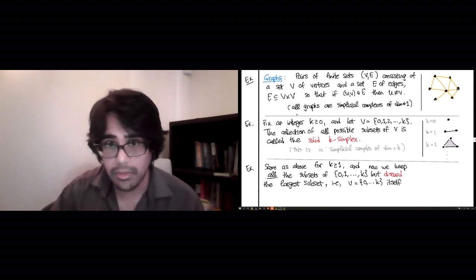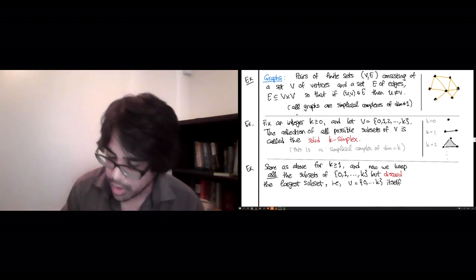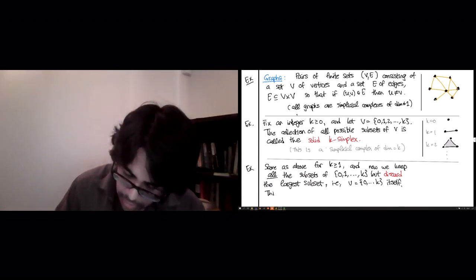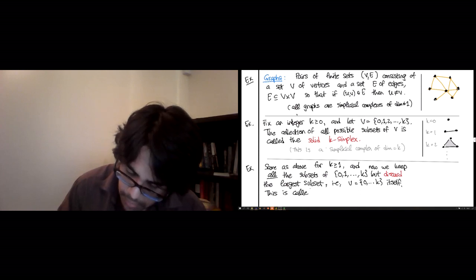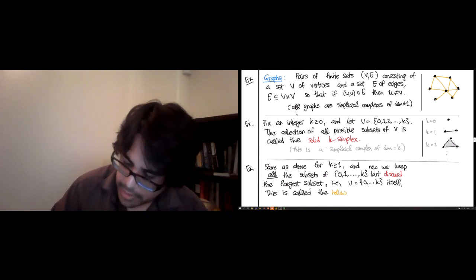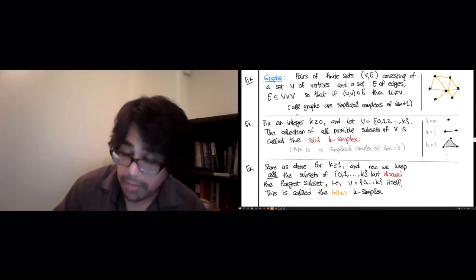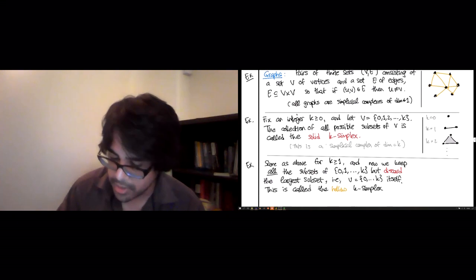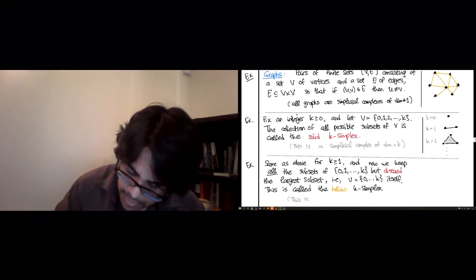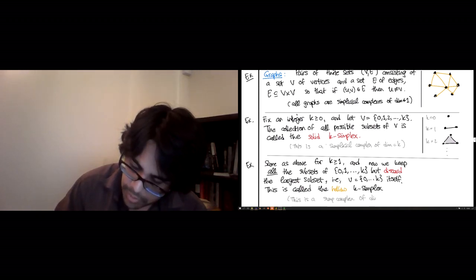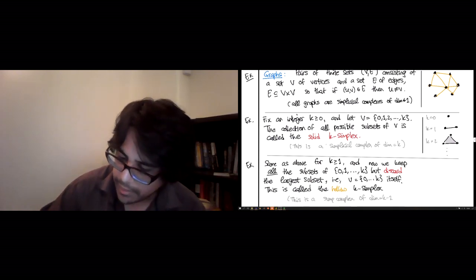You can check that this still satisfies the requirements of being a simplicial complex for k bigger than or equal to one. And this is called the hollow k-simplex. And you can check because we threw away that large, the unique largest dimensional simplex, this is a simplicial complex of dimension equal to k minus one, which is the reason we started at k equals one instead of k equals zero like in the last case.